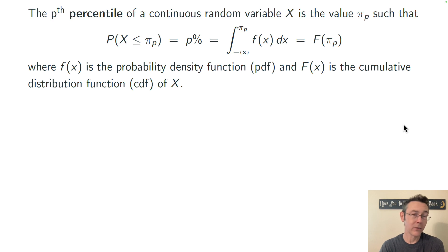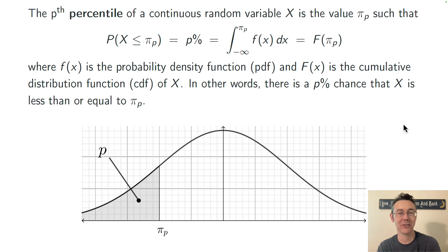You can also write this in terms of the integral of the pdf, the density function. The integral from negative infinity to π_p of little f(x) dx should be p percent, where little f is the probability density function.